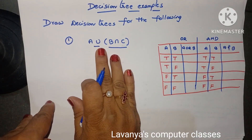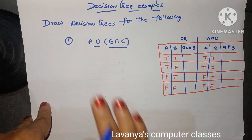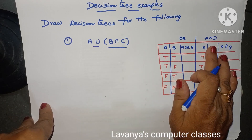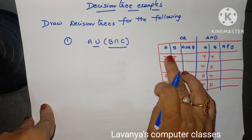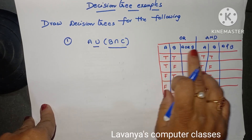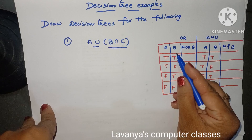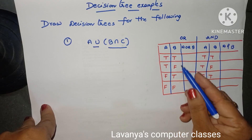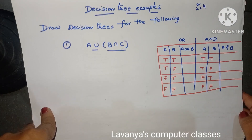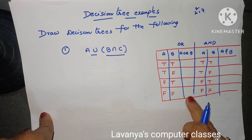Before drawing the decision tree, first we find out the truth tables for the AND operation and OR operation. OR and AND are binary operators, working between two variables. I will take two variables A and B and apply the OR operator. When two variables are there, we have two-to-the-power-of-two, that means four possibilities: true-true, true-false, false-true, false-false.